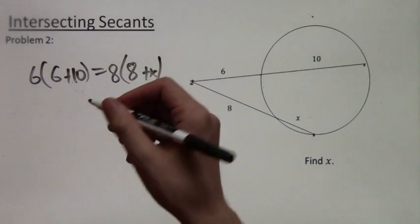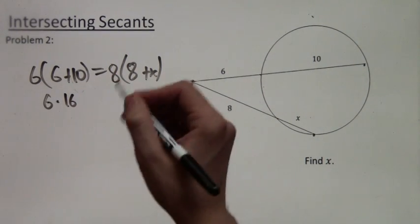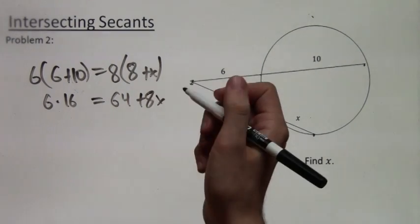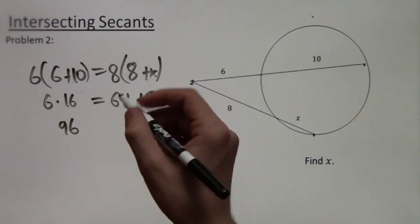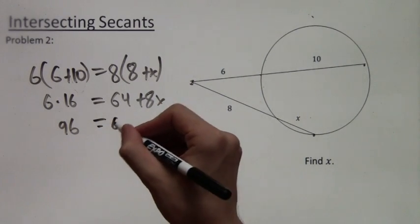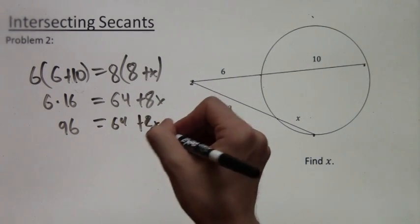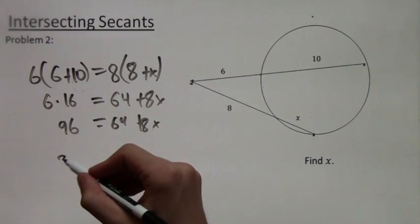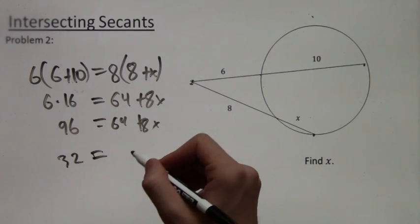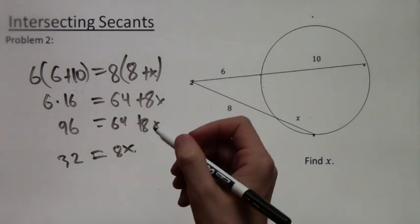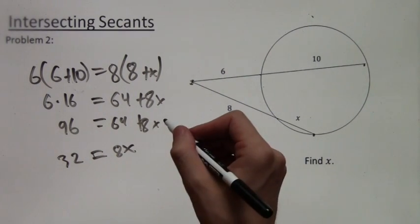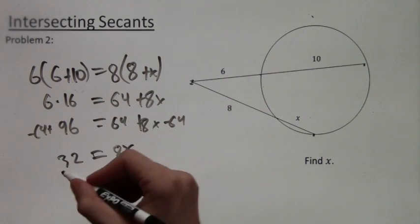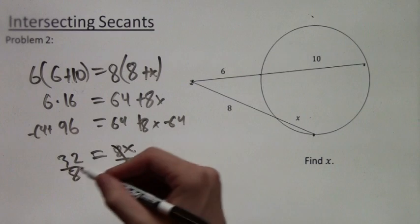We multiply it out and simplify it. We have 6 times 16 equals 64 plus 8x. And then 6 times 16 is 96, and this equals 64 plus 8x. We're going to subtract 64 on both sides. We get 32 equals 8x. Now all we've got to do is divide by 8, and we get x equals 4.